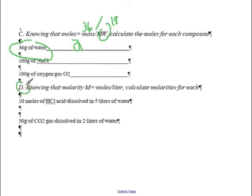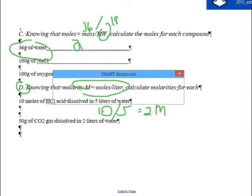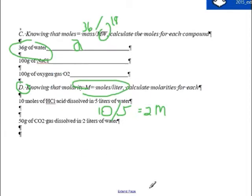Now that we know the number of moles, let's convert it into a concentration unit: molarity. Molarity equals moles divided by liters. For example, 10 moles of hydrochloric acid in 5 liters: 10 divided by 5 gives an answer of 2 molarity, which is really, really big. For the last one, you're going to have to convert grams to moles first and then use the molarity equation.